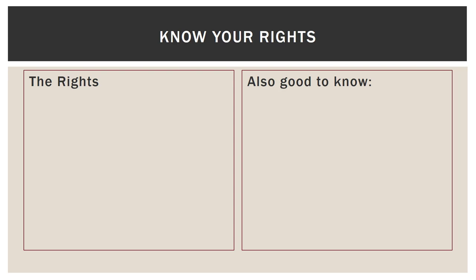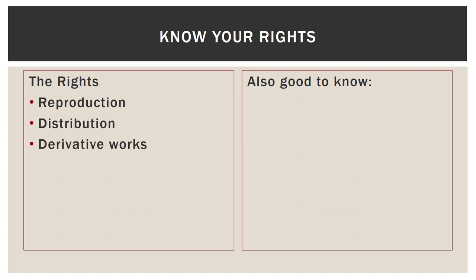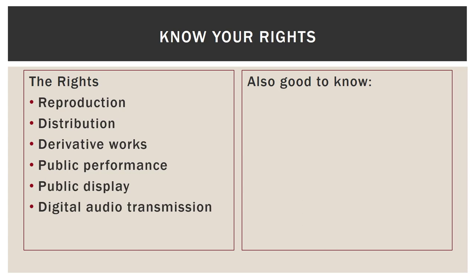Knowing your rights. There are five or six rights, depending on who you ask, that go with copyright. The first is reproduction — I wrote a book and I have the right to make as many copies as I want. The second is distribution — I made a bunch of copies and now I'm handing them all out. The third is derivative works — my book was so successful that I'm going to translate it into another language, or turn it into a movie or a play. Fourth is public performance — I'm going to publicly perform that play. Fifth, public display — if I created a piece of art or architecture, I have the right to publicly display it. And last, digital audio transmission, which covers sound recordings.